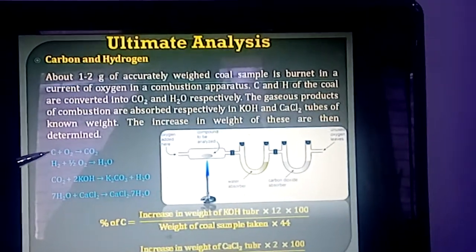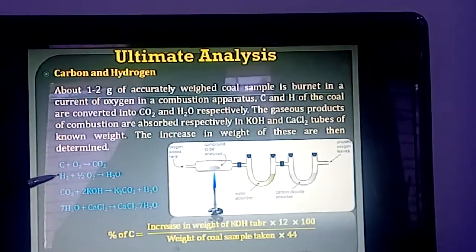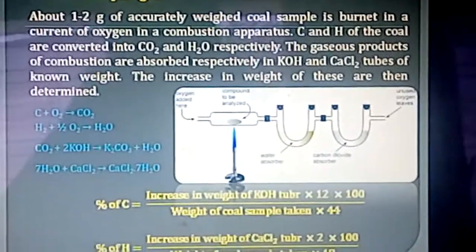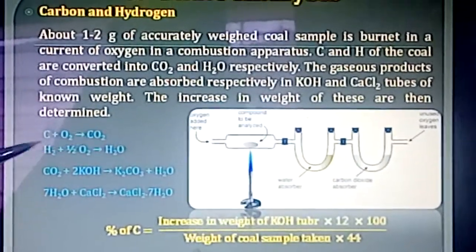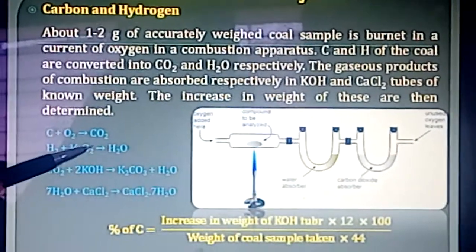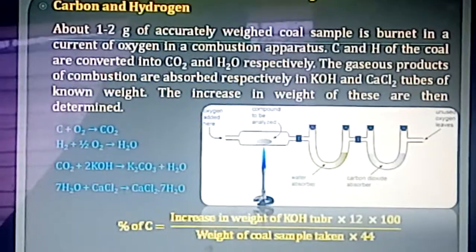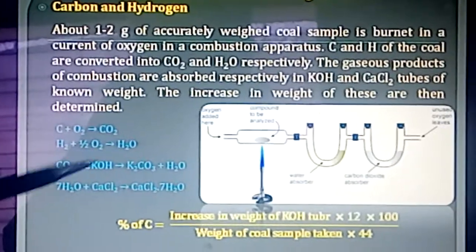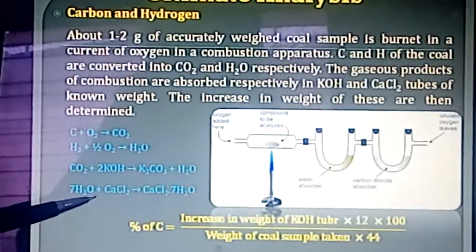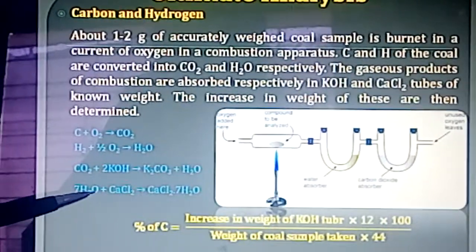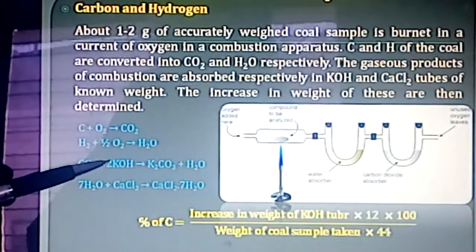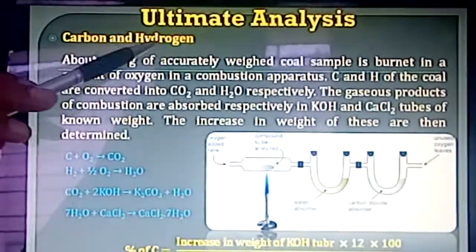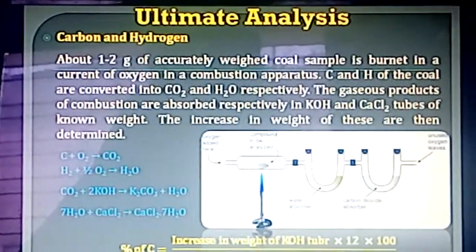If your coal sample contains carbon and hydrogen, carbon is oxidized to carbon dioxide and hydrogen is oxidized to water. The reactions are: C + O₂ → CO₂, and H₂ + ½O₂ → H₂O. Then this carbon dioxide (CO₂) is absorbed by KOH solution and H₂O is absorbed by CaCl₂ solution. From the increase in weight of the CO₂ and CaCl₂ absorbers, we can find out the percentage of carbon and percentage of hydrogen present in the fuel sample.